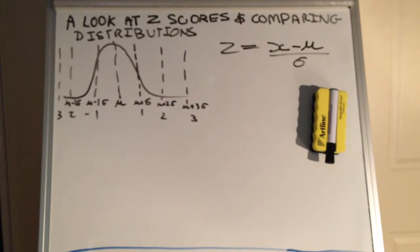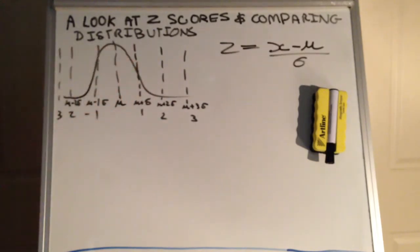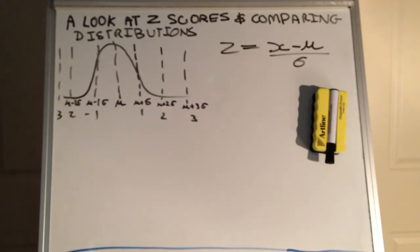I briefly touched on z-scores at the end of my last video. With z-scores we look at the standard deviation and mean in order to calculate the position of where a value lies. So we know that if a value on the distribution lies one standard deviation to the right of the mean, then that's a z-score of one. It is essentially a measure of how many standard deviations our point is away from the mean, in either the negative or the positive direction.